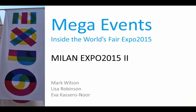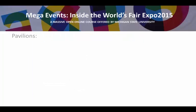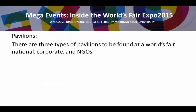In our second part of this fourth module on Expo 2015, we'll look at some of the pavilions and the US pavilion in particular. There are three major types of pavilions that can be found at a world's fair: those offered by countries as national pavilions, corporate pavilions, and non-governmental organizations which can be charities or organizations like the United Nations.